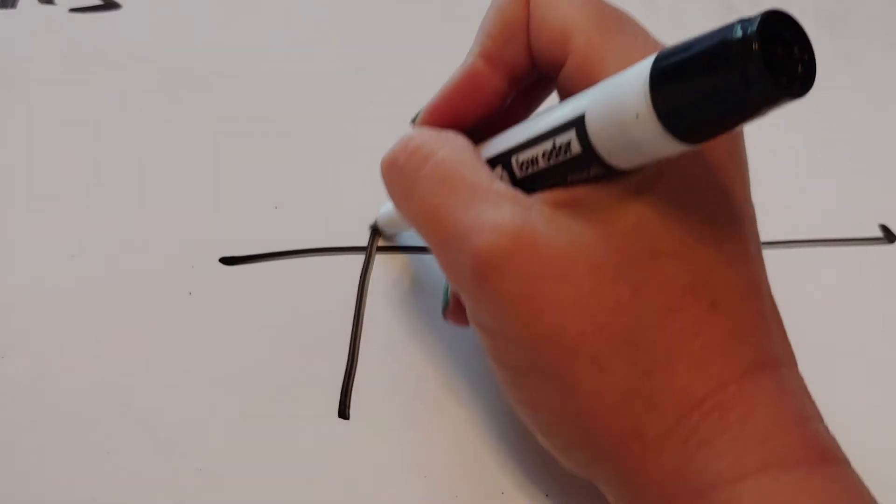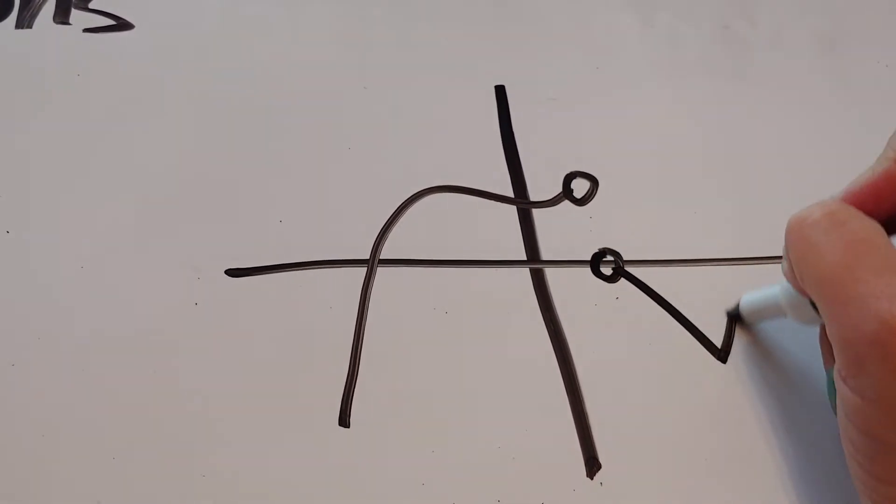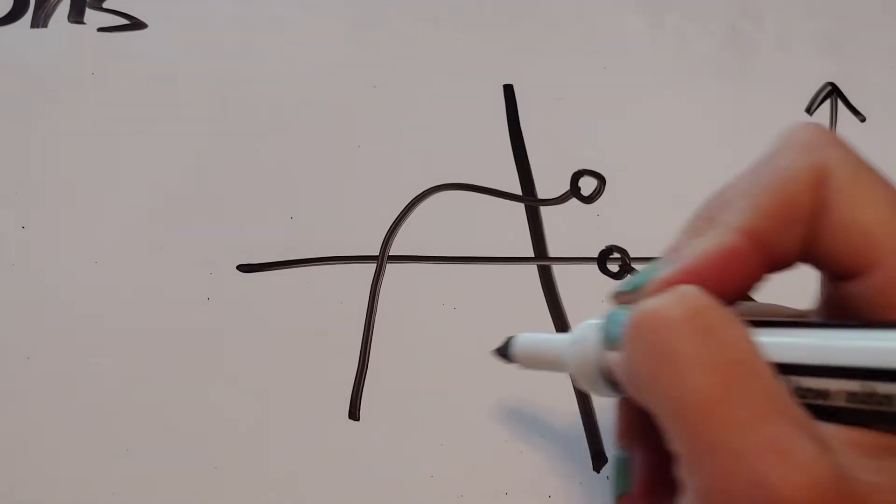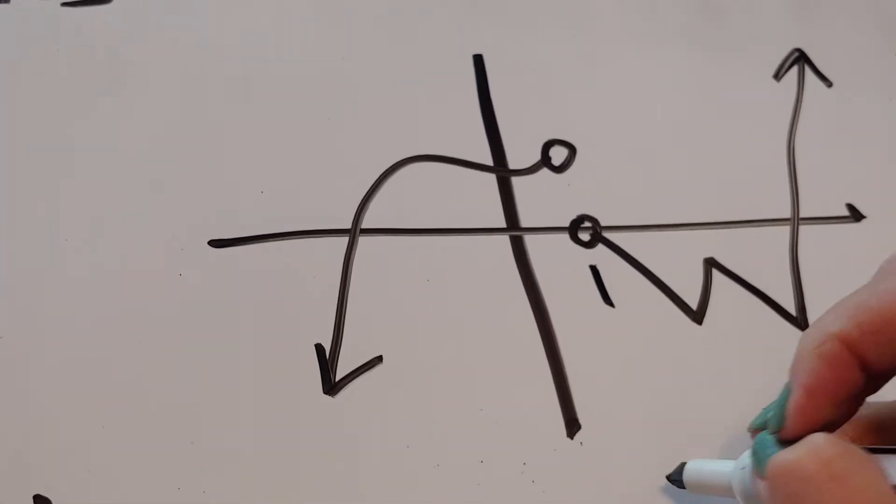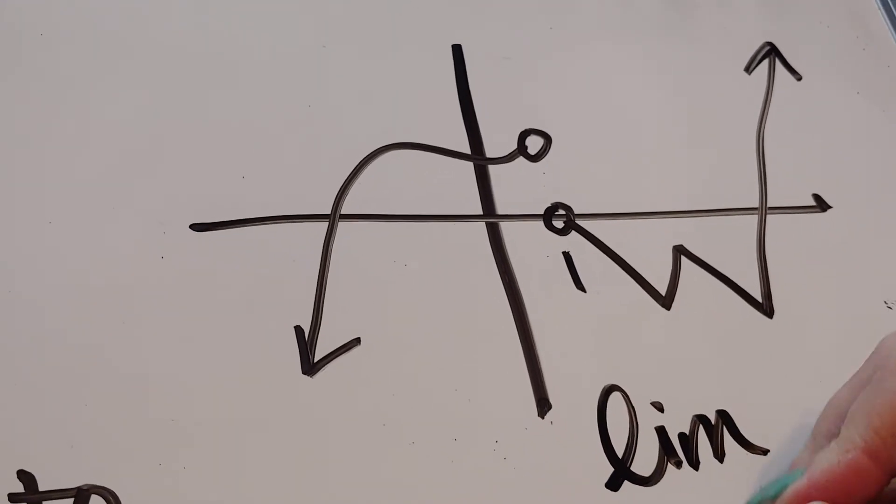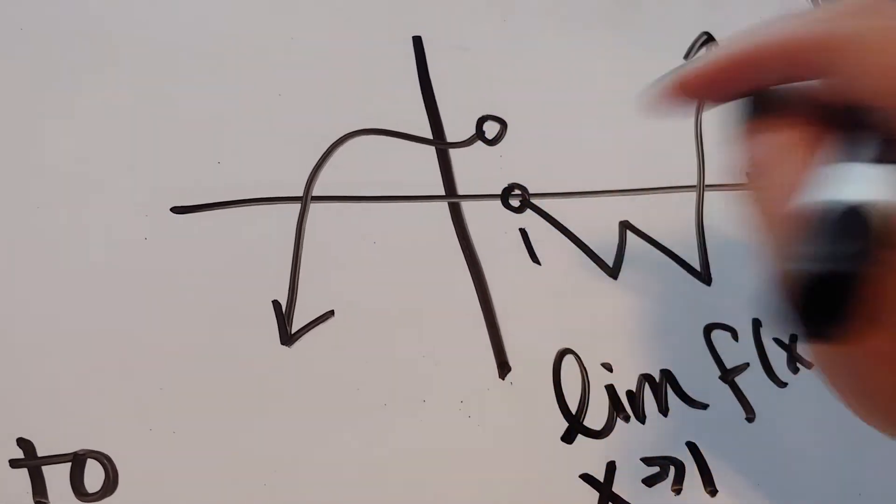So let me go ahead and do another one. So if we had a graph, and we can make it as funky as you like. We can do another weird w. If I ask you what the limit as x approaches 1 is of this graph, I can see there's a jump.